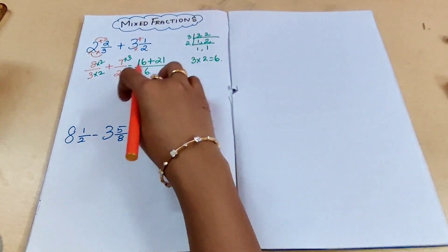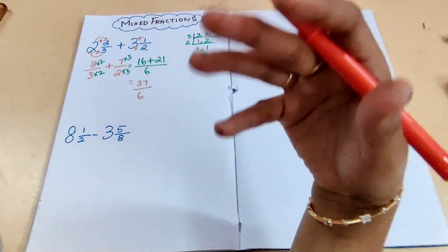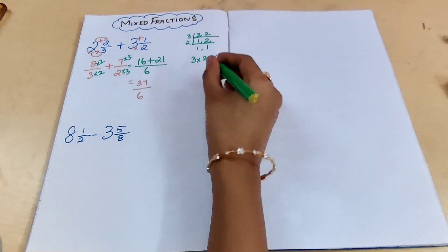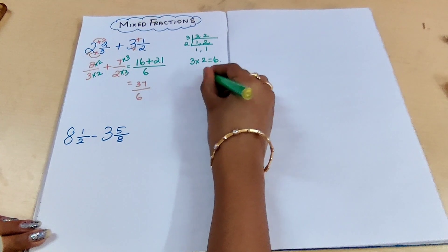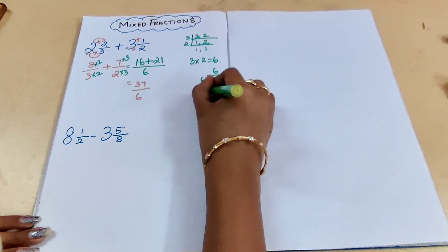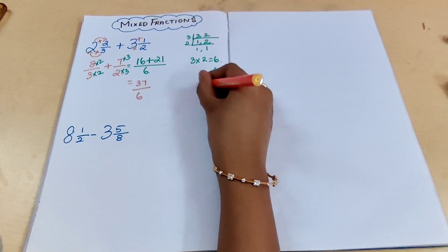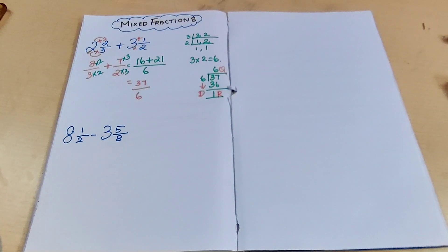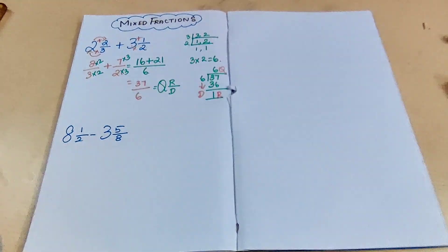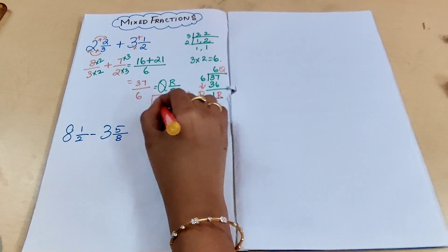The answer 37 by 6 is not in mixed fraction form. Since the question was given in mixed fraction, convert the answer back to mixed fraction. Divide 37 by 6: 6 sixes are 36, remainder is 1, quotient is 6. So write quotient, remainder by divisor: the answer is 6 and 1 by 6.